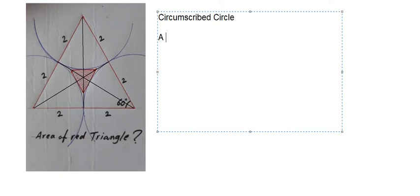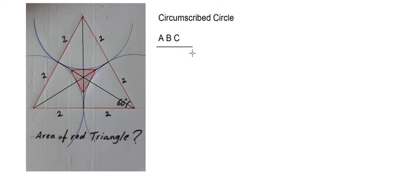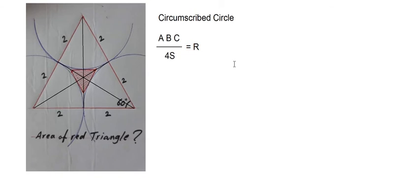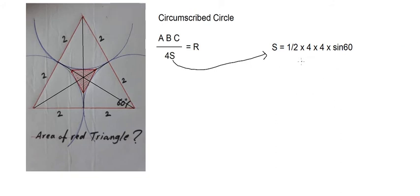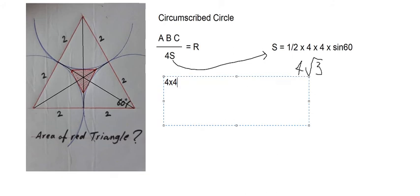The circumscribed circle formula is R = (A × B × C) / (4S), where A, B, C are the side lengths of the triangle. To find S, we use the formula S = (1/2) × 4 × 4 × √3, giving us 4 multiplied by the square root of 3.